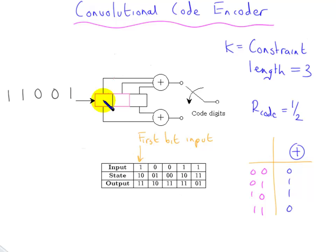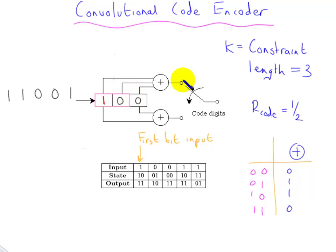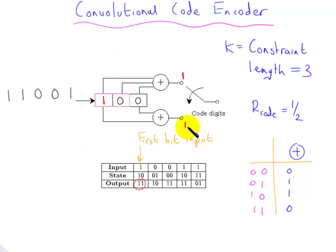For example, the very first bit — let's put a one inside here. The encoder always begins in the all-zero state, so that the registers are zero, zero, zero, and then the one comes in. One and a zero and a zero gives you a one — just count the number of ones: if it's odd, the output is a one; if even, the output is a zero. So the first output code word is one, one, as you can see in the table.